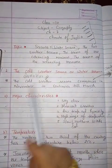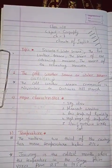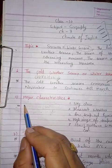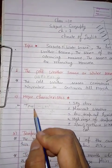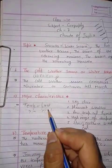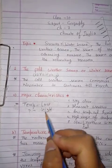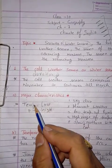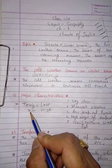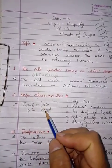Now the major characteristics of winter season. During winter season, temperature is low and pressure is high. Always keep in mind: temperature and pressure are inversely related — if temperature is high, pressure is low; if temperature is low, pressure is high.